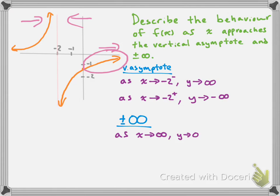As x approaches negative infinity, that's the function traveling in the other direction, and it also looks like the function is approaching the x-axis from the positive direction. So as x → -∞, y → 0 as well. This is how to describe the behavior of a rational function as it approaches the vertical asymptotes and positive and negative infinity.